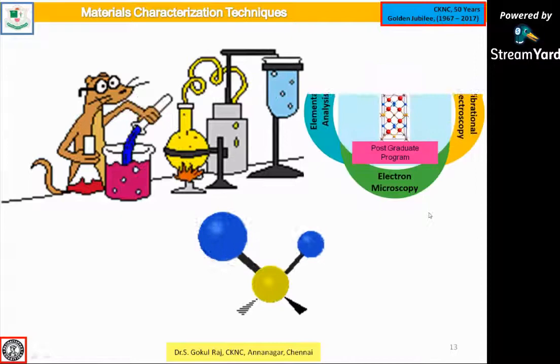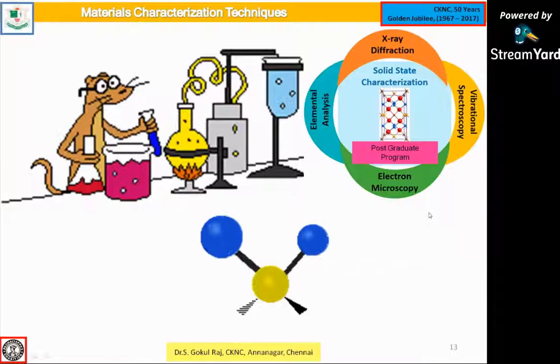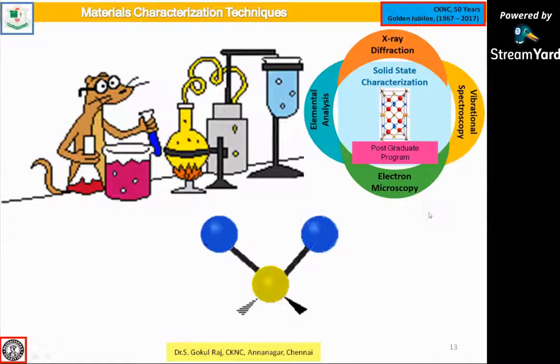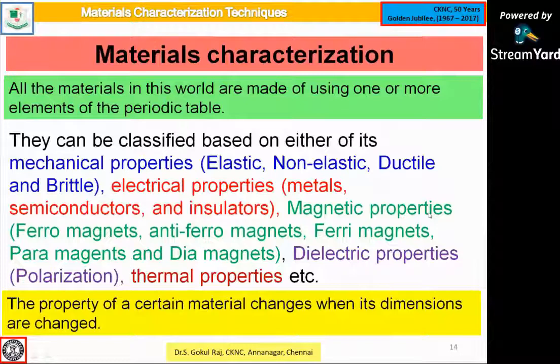Generally, when we say about solid state characterization, it may be X-ray diffraction, vibrational, surface, and elemental analysis. These are some of the basic analyses widely introduced in postgraduate programs. In material characterization, all materials are made of one or more elements from the periodic table — hydrogen, helium, lithium, beryllium, boron, carbon, and so on. It is a mixture of compositions of these elements from the periodic table.